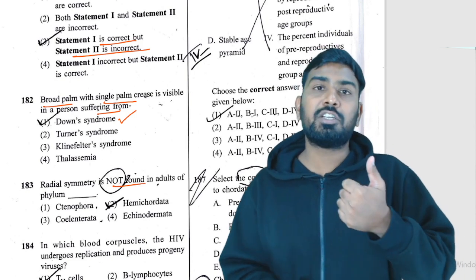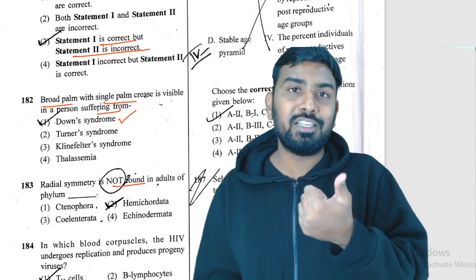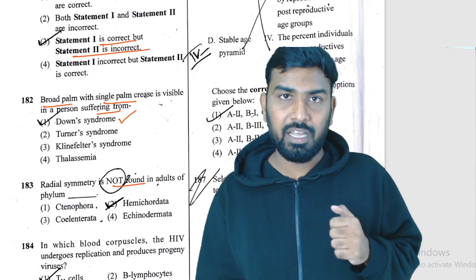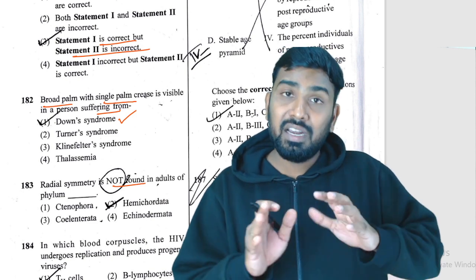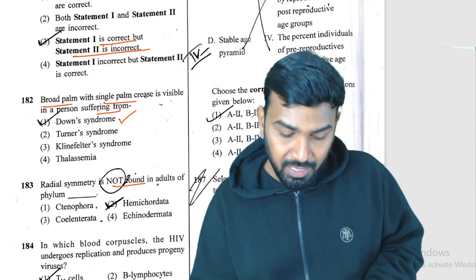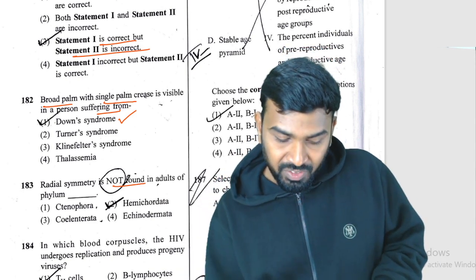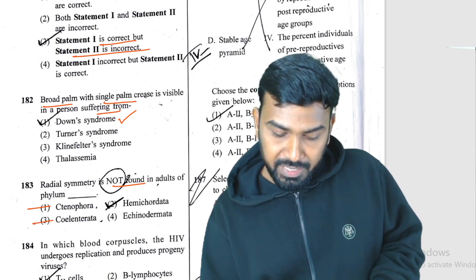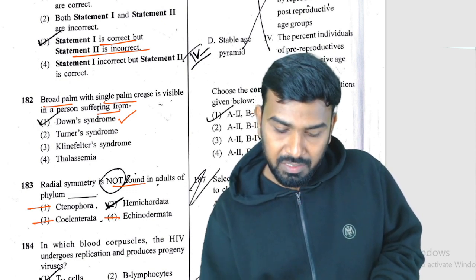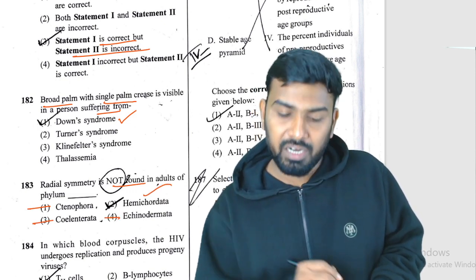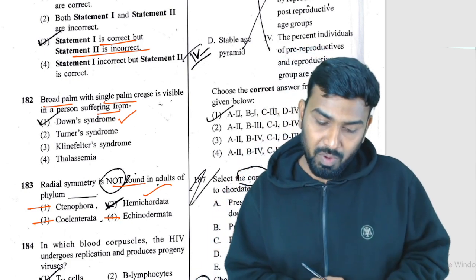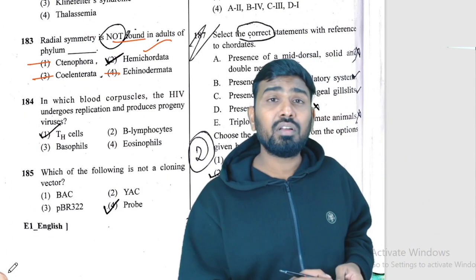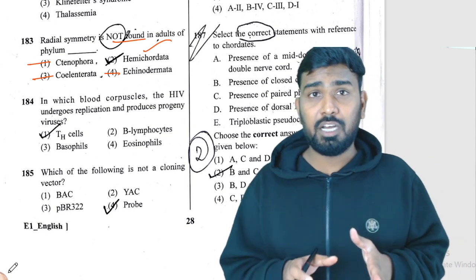Question 183: radial symmetry — where is it found? Radial symmetry is found in Coelenterata, Ctenophora, and Echinodermata. It is not found in adults of some groups — the question asks about where it is NOT found.